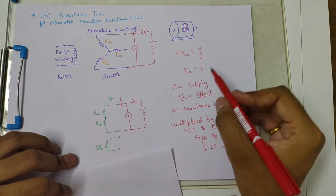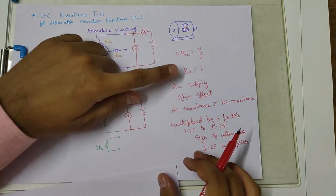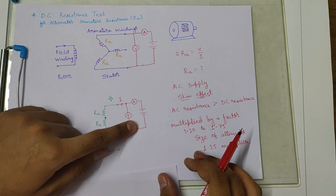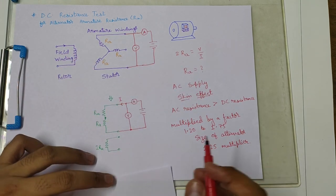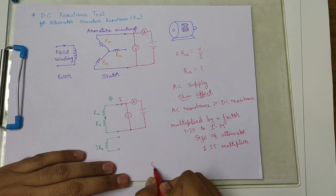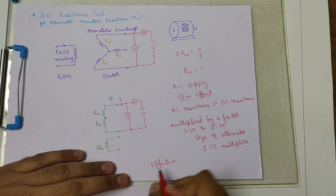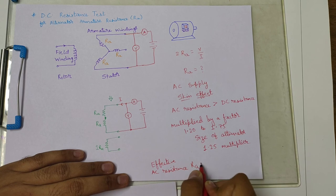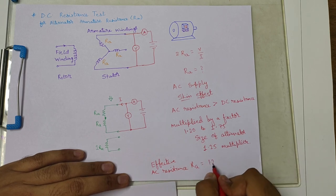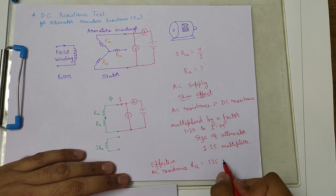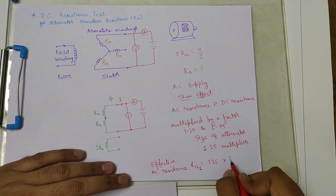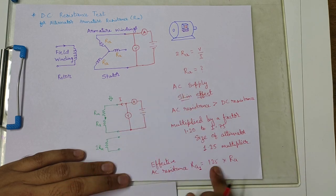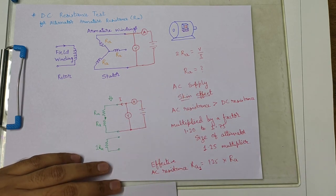To get the actual value of AC resistance, whatever value we are calculating by the method of supplying DC current is multiplied. So the effective AC resistance RA will be equal to 1.25, or depending on the size any multiplying factor, multiplied by the DC resistance RA. So this value will be multiplied by 1.25.